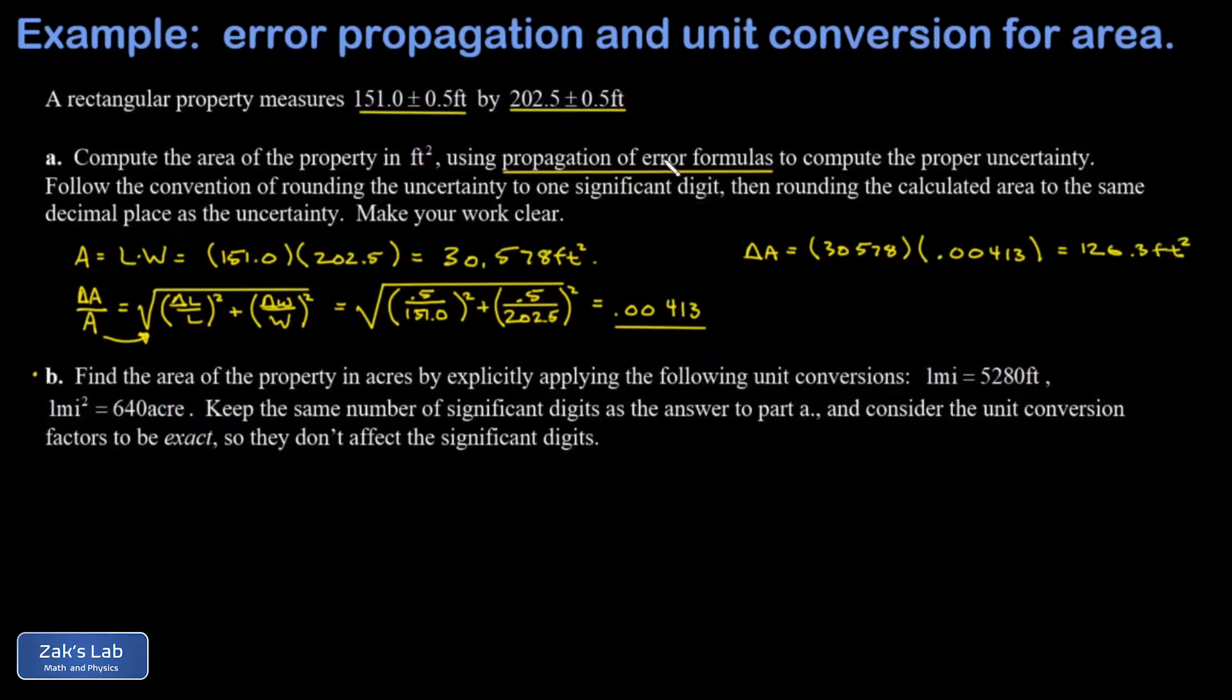Now we're asked in this problem to follow a convention of rounding the uncertainty to one significant digit. So this is how I handle it in my physics labs. So I'm going to say this is approximately 100, I'm rounding down here, 100 square feet, one significant digit on the uncertainty itself. Then we round the original quantity to the same decimal place, in other words, the hundreds place. And this is where I get my final answer. So A is going to be rounded to 30,600 square feet.